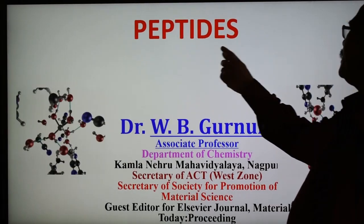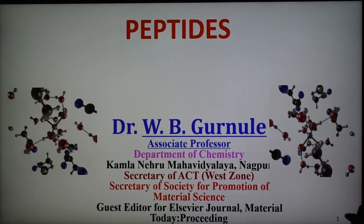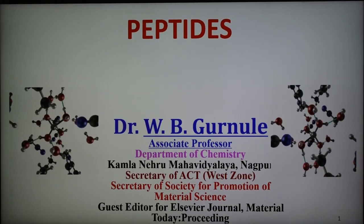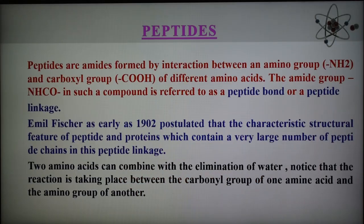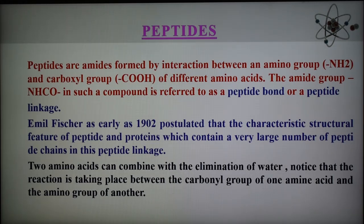The topic is peptide — that is the peptide linkage or peptide bond and different aspects about these peptides. First, what is meant by peptide bond or what is a peptide? Peptides are amides formed by the interaction between the amino group and carboxylic acid group of different amino acids. The amide group NHCO is known as peptide bond, also known as peptide linkage.